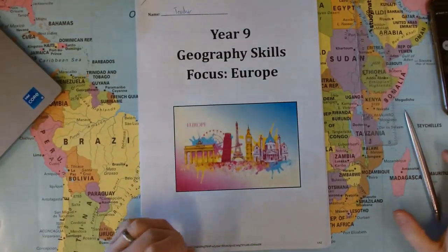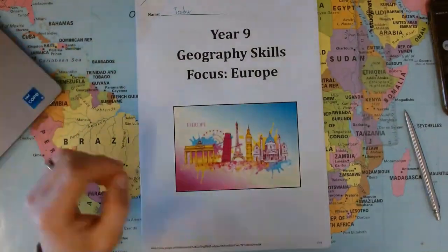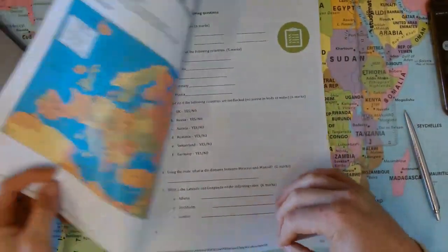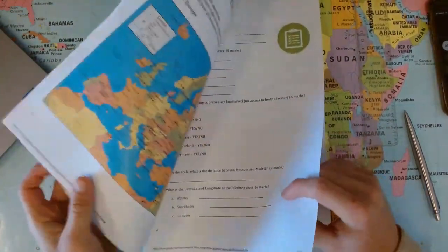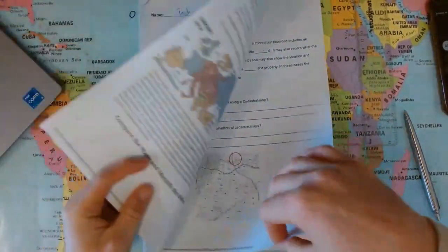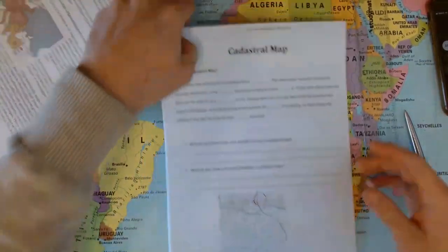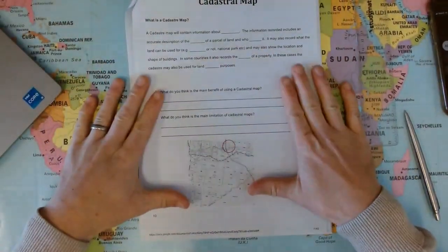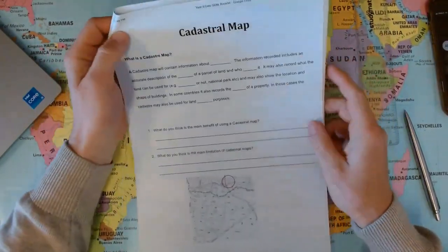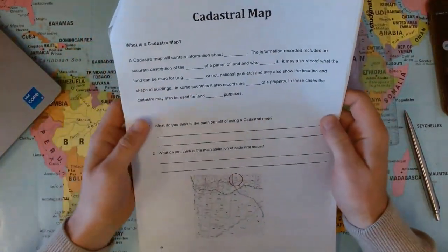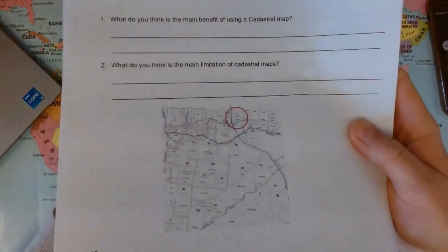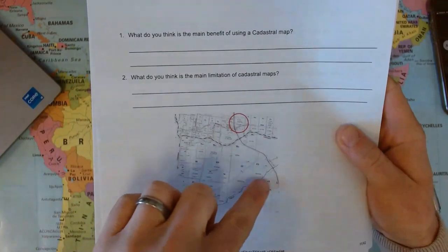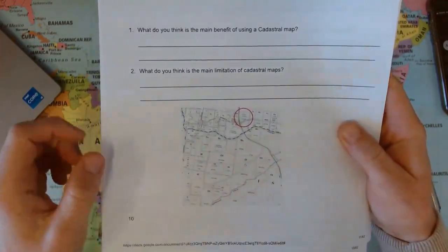Right, year nine, we're moving on to our second skill which is looking at cadastral maps. We're moving from political and topographic to page 10. Cadastral maps sound like something you've never heard of or you're never going to see, but if I just zoom in here you should be able to see that it is a map that looks very similar to something that you would see on Google Maps.